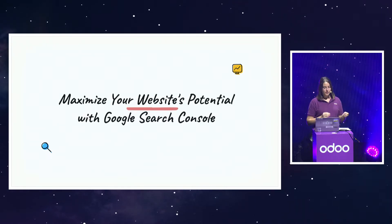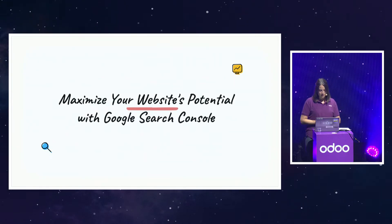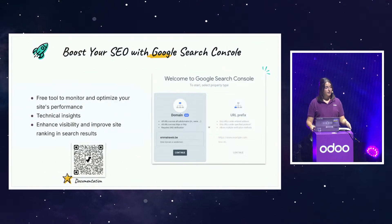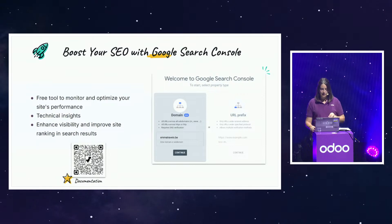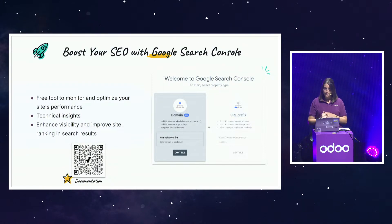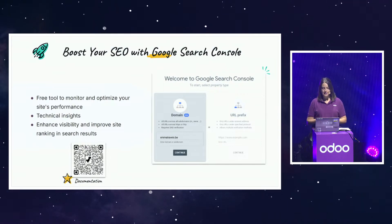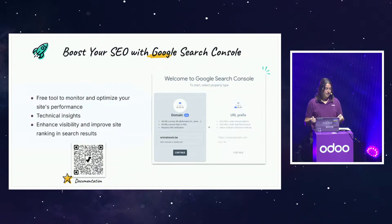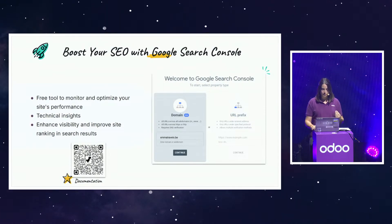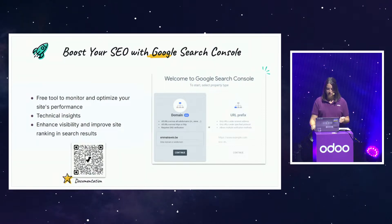After covering registration of your free domain, we will discover how to use the Google Search Console. It's a really good tool for ensuring the visibility and health of your domain in Google Search. Google Search Console is a free tool provided by Google that helps you monitor, maintain, and troubleshoot your site's presence in Google Search results. It allows you to submit your website sitemap, monitor search performance and traffic, identify and fix issues, and track backlinks and internal linking. If you want your domain to be visible on Google, Google Search Console allows you to confirm that your domain is properly indexed and gives you insights on how Google perceives your website, allowing you to optimize for better rankings.